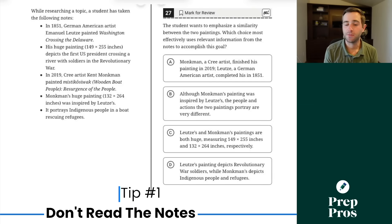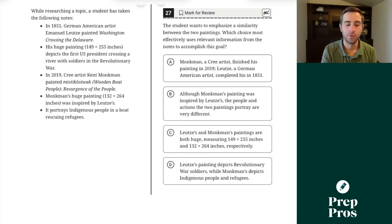Now, our first tip is going to be for what I call notes questions, and your tip is going to be do not read the notes unless necessary. So what you're going to see for about 80% of these questions is you never need to read the notes and you can just find your correct answer because only one will be doing what the SAT wants you to do. So this first sentence is going to tell you what the SAT wants you to do. The student wants to emphasize a similarity between the two paintings.